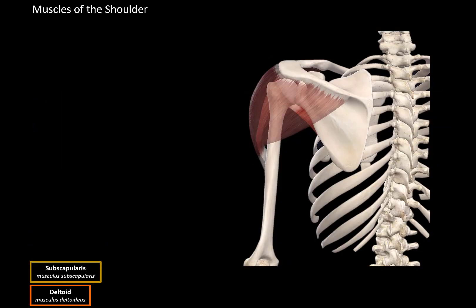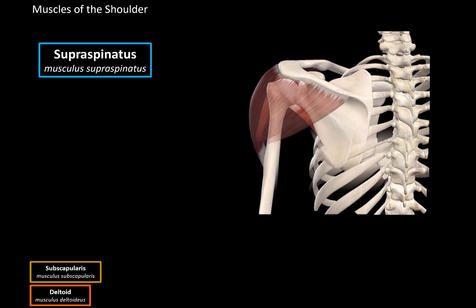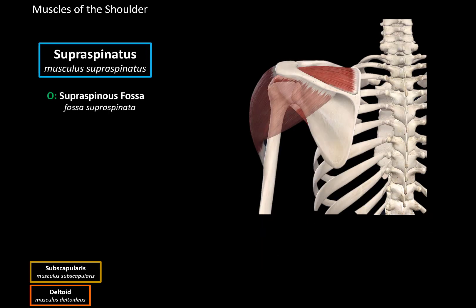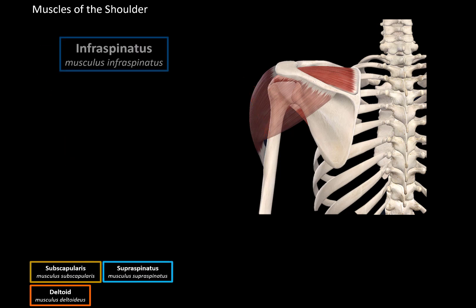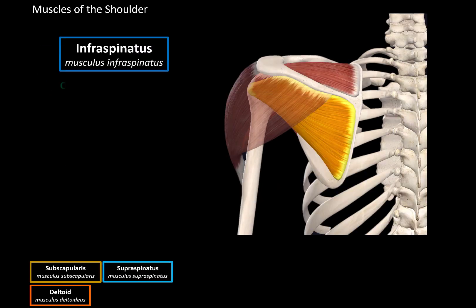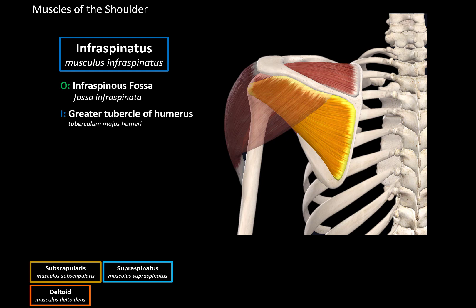Now looking at the scapula from the posterior view, we can see the supraspinatus. It originates from the supraspinous fossa — the fossa above the spine of the scapula — and it inserts at the greater tubercle of the humerus. When this muscle contracts, it abducts the arm. Then we have the infraspinatus, which originates from the infraspinous fossa and inserts at the greater tubercle of the humerus. When it contracts, it externally rotates the arm.